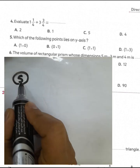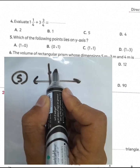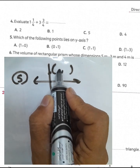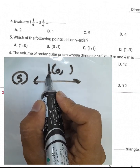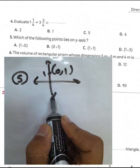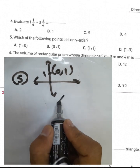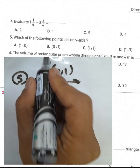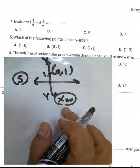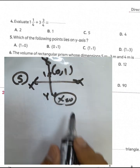Question number 5: which of the following points lies on the y-axis? Any point on the y-axis has its first coordinate equal to 0, and the second coordinate can be any number — for example, 0 and 1. This point (0, 1) lies on the y-axis. So, if a point lies on the y-axis, then x equals 0. And if a point lies on the x-axis, then y equals 0.